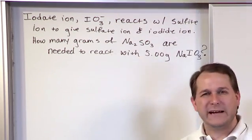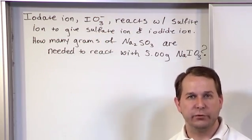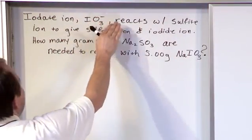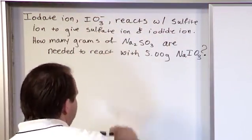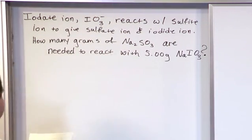So step one, before we get into anything else, let's translate that first sentence into something usable. The first sentence is telling us that the iodate ion is reacting with something to give us something and something else. That sounds a whole lot like a chemical reaction. So let's write it down and see what it says.